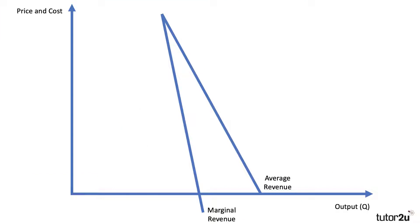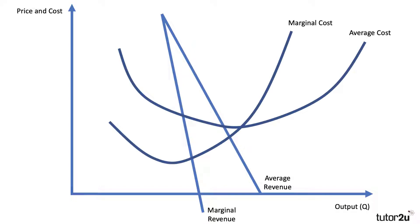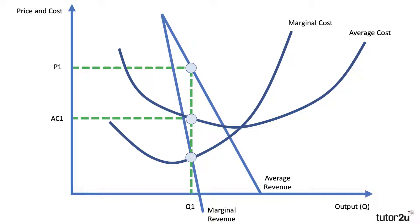Here we have a fairly inelastic demand curve — the average and marginal revenue curves are both downward sloping. Let's superimpose some cost curves: marginal and average costs. A profit maximizing firm will produce an output of Q1, which allows them to sell at the price of P1 — a high price, of course, because demand is fairly inelastic. There's the unit cost of the same output level AC1, and therefore the shaded area represents the amount of monopoly profit.